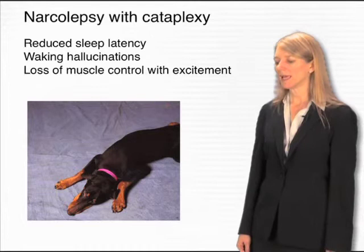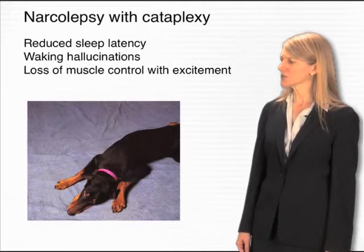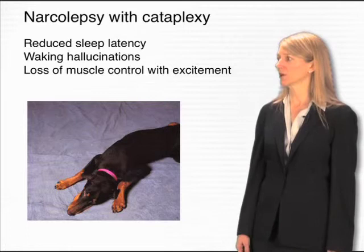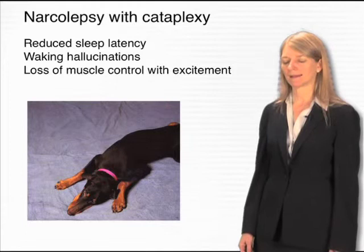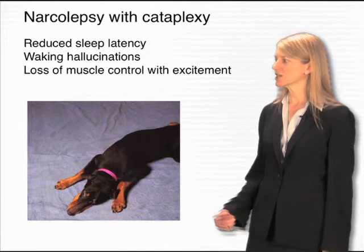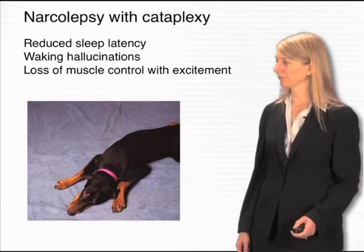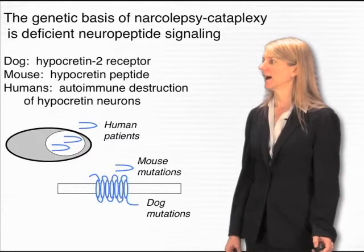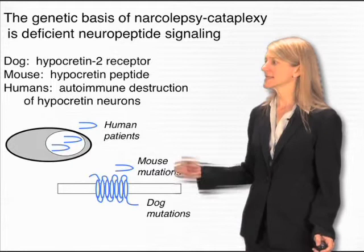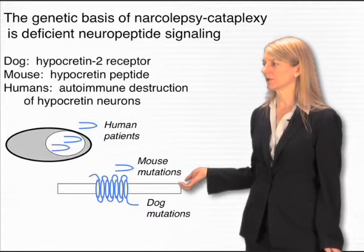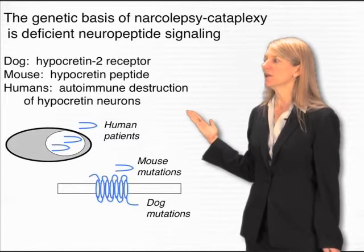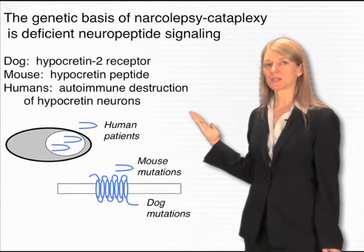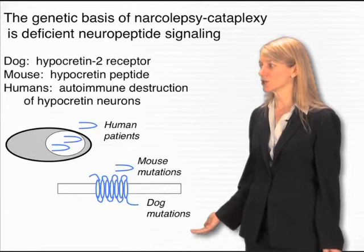Very little was understood about the biology of human narcolepsy until certain dog owners noticed that their dogs had a disorder very much like human narcolepsy—falling asleep inappropriately and collapsing when excited. Emmanuel Mignot, studying these dogs, was able to trace down the genetic changes causing their abnormal sleep-waking behavior. He found that these dogs had a deficiency in a brain chemical called hypocretin that signals through a G-protein-coupled receptor called the hypocretin-2 receptor. Building on this and similar discoveries in mice, we were able to show that the exact same biological system is involved in human narcolepsy with cataplexy.